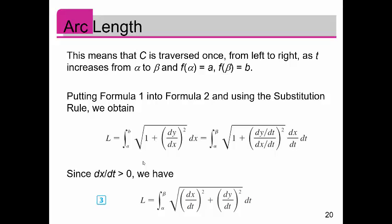This means that C is traversed once from left to right. That's important. As t increases from alpha to beta, f of alpha equals a and f of beta equals b. So that's how you can find your bounds of integration to help you. Putting formula 1 into formula 2 and using the substitution rule, we have this.